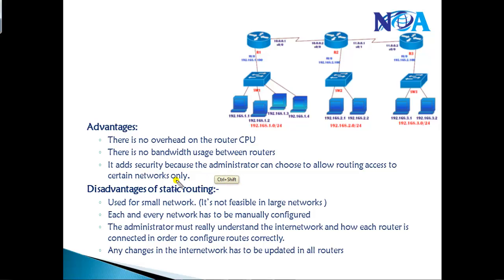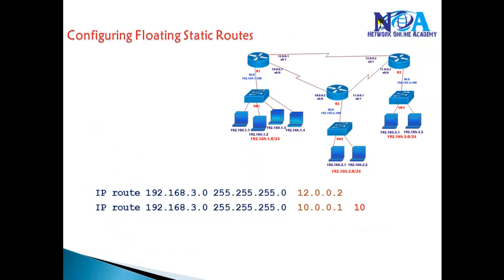Some basic advantages of static routing: there is no processing overhead because routers don't send or receive any advertisements, there is no bandwidth utilization for updates, and it adds some security since the route is pre-configured by the administrator. But if you consider the disadvantages, there are a lot of them with static routing. That's why we always prefer dynamic routing in production networks, where it will automatically use the second-best route if any route fails. We don't need to go to each router and configure floating static routes — but that is an option you should know.